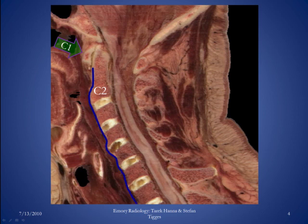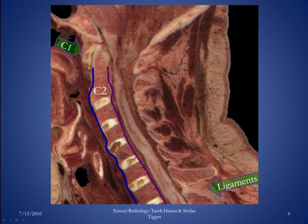Anterior to the cervical vertebral bodies, outlined in blue, is the course of the anterior longitudinal ligament. That holds the cervical vertebral bodies in place — it's a relatively tough ligament and prevents them from migrating forward. Along with the anterior longitudinal ligament, you have a posterior longitudinal ligament, outlined in purple, which runs along the posterior aspect of the vertebral bodies. There are also other ligaments, including some of the more posterior ligaments that connect the spinous processes to each other — those are the interspinous ligaments.